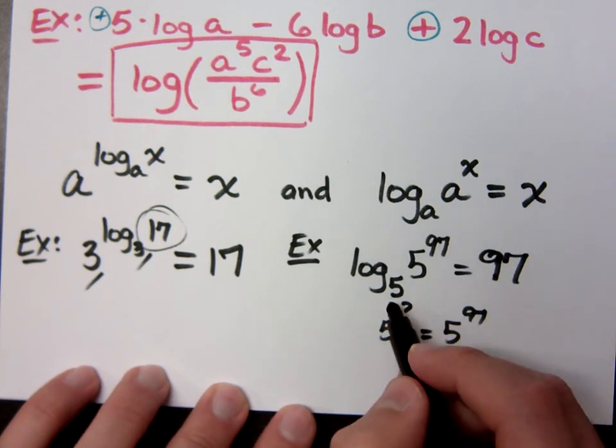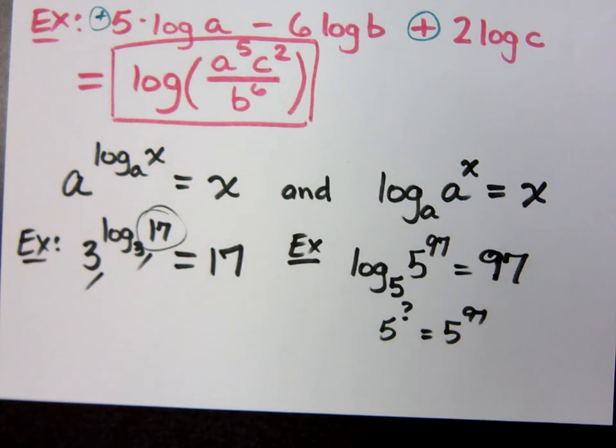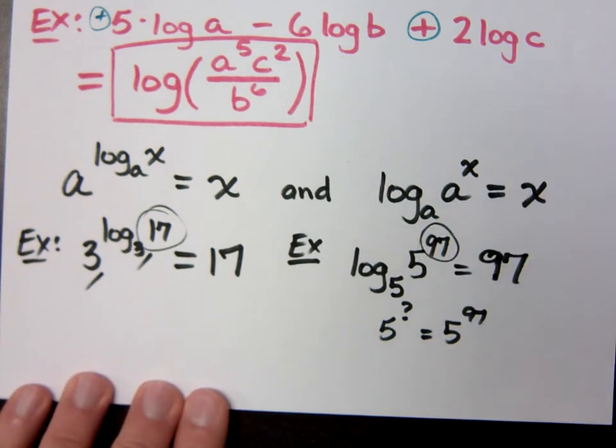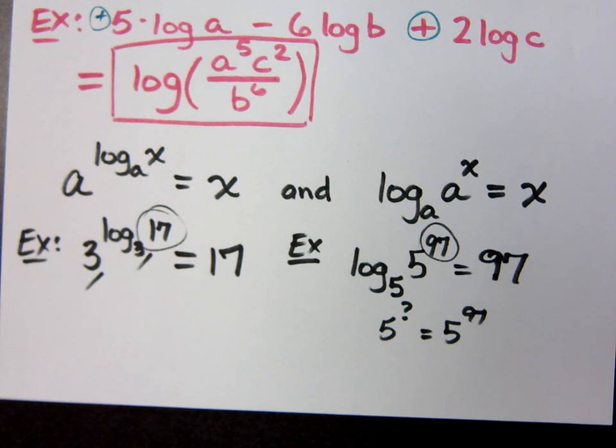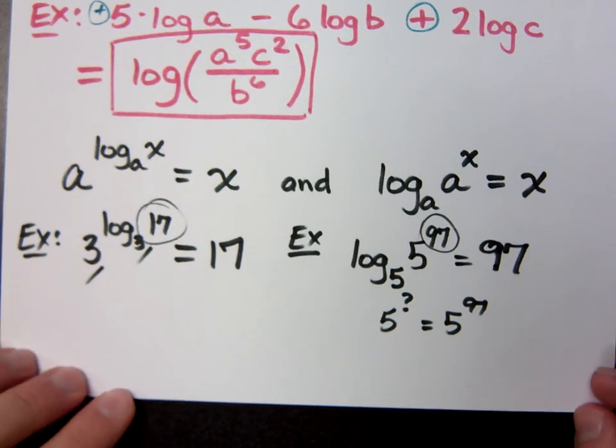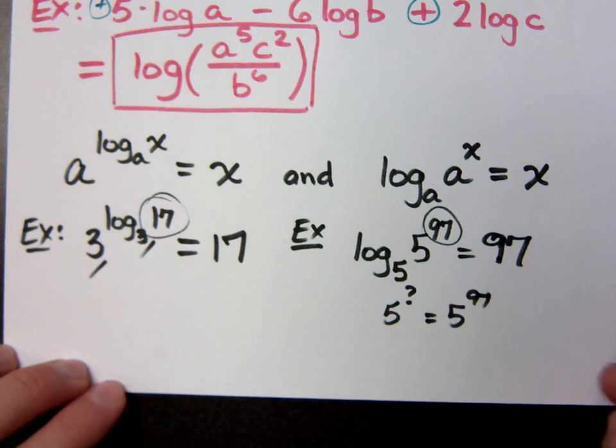The bases are the same. If the bases are the same, that stuff's gone and you're left with just the 97 here. I know it's crazy, but it's true.